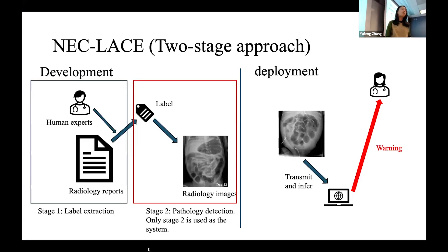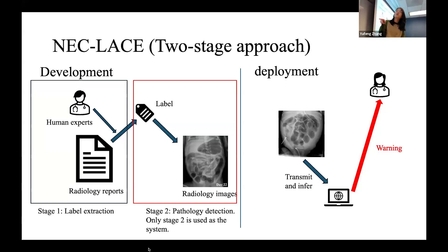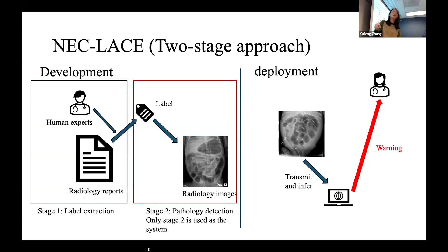This leads to Aim One: a human-assisted, privacy-preserving large language model for abdominal X-ray report labeling. After building the whole system — the NECKLACE model — the first step is having human experts annotate radiology reports to indicate whether there is a NEC description. We use that annotated dataset to train a model and label the remaining unannotated data.